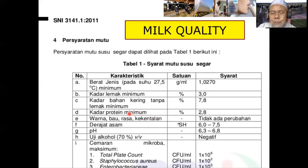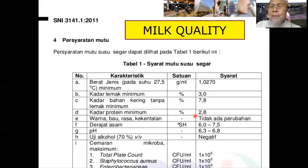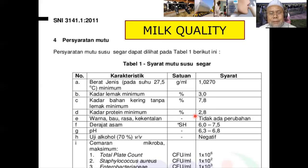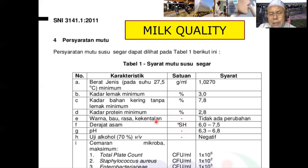Kadar protein, ini juga minimum, yaitu 2,8 persen. Kemarin rata-rata kadar protein susu yaitu sekitar 4. Warna, bau, rasa, kekentalan tidak ada perubahan artinya normal. Derajat asam disebut SH, penemuannya yaitu Soxhlet-Henkel, yaitu penemu metode ini, derajat asamnya adalah 6,0 sampai 7,5.